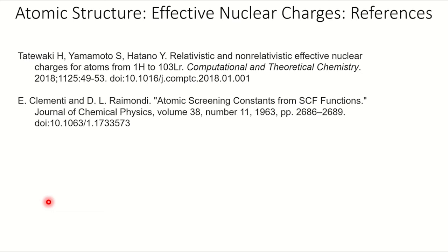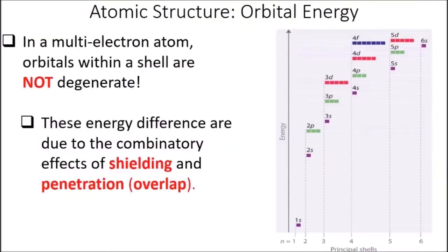Now let's come back to non-degenerate orbitals in multi-electron atoms. In a multi-electron atom, orbitals within a shell are not degenerate — the opposite of hydrogen. These energy differences are due to the combined effects of shielding and penetrance. An electron in the 2s orbital penetrates inside the filled 1s orbital and overlaps with it more than a 2p orbital does, because the 2p is slightly further away. Hence, in an atom with a filled 1s orbital, the Z effective experienced by a 2s electron is greater than that experienced by a 2p electron. Consequently, the 2s electron is more tightly bound and has lower energy than 2p orbitals — Coulomb's law.